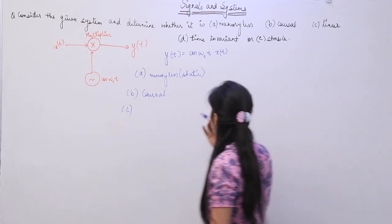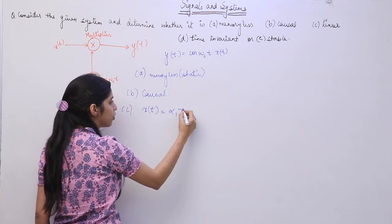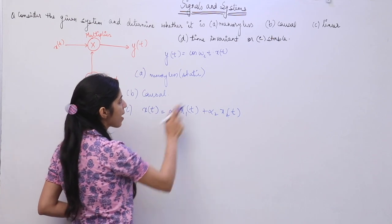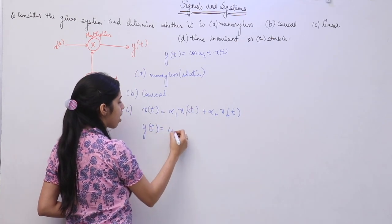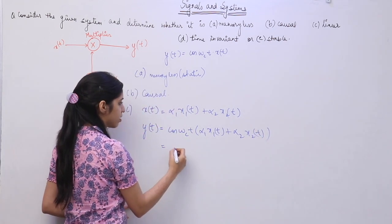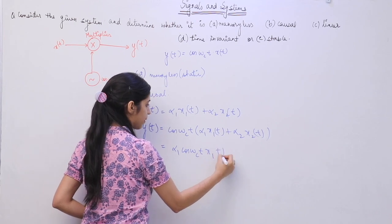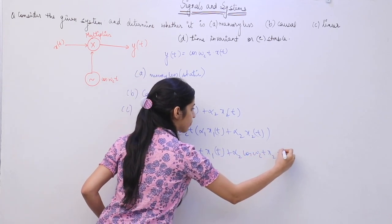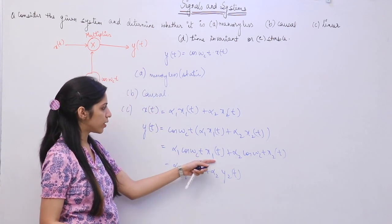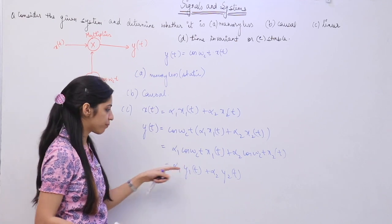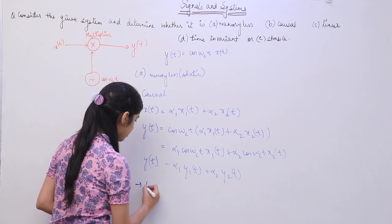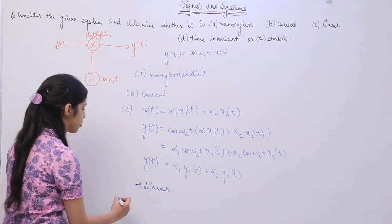Next we check linearity. I am considering the input x(t) equal to α1·x1(t) plus α2·x2(t), checking homogeneity as well as superposition using a single signal. If I apply this x(t) to the system, the output y(t) is equal to α1·y1(t) plus α2·y2(t). This satisfies superposition as well as homogeneity, which means the system is going to be linear. This is a linear system since it satisfies both homogeneity as well as superposition.